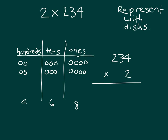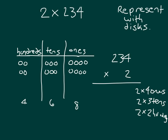Let's show our partial products. That's two times four ones. Next, we're looking at the next digit in 234, or the three tens — so that's two times three tens. And finally, we have two times two hundreds. Two times four ones is worth eight ones, which is eight. Two times three tens is six tens, which we write as sixty. And two times two hundreds is four hundreds.